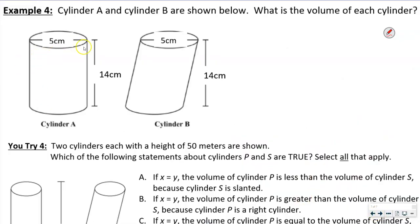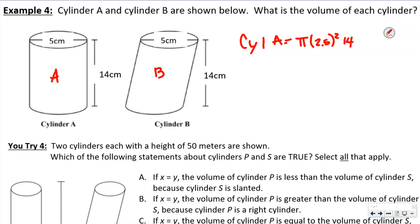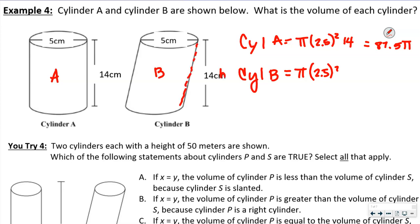A cylinder A and cylinder B are shown. For cylinder A: volume = π × (2.5)² × 14 = 87.5π. For cylinder B: it's still π × (2.5)² × 14 — we use the vertical height, not the slant height, when finding volume — so that's also 87.5π cubic centimeters. Both cylinders have the same volume.